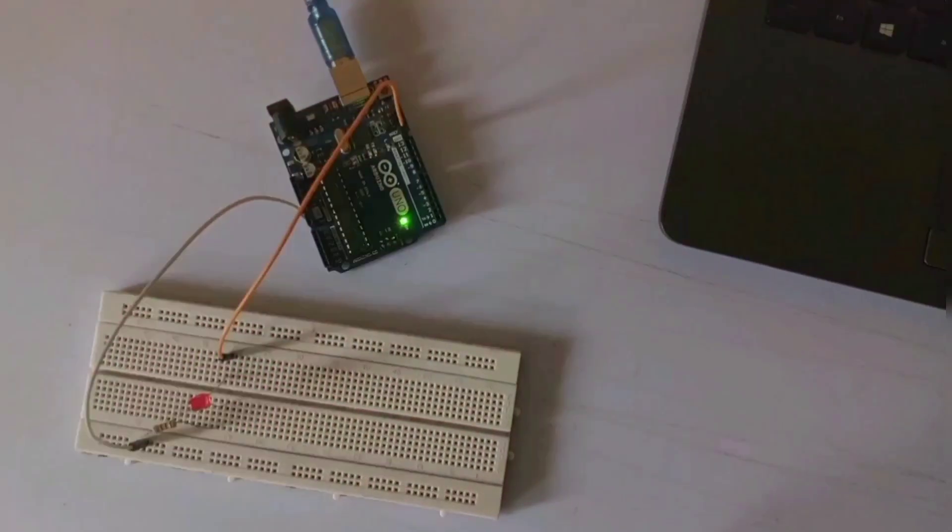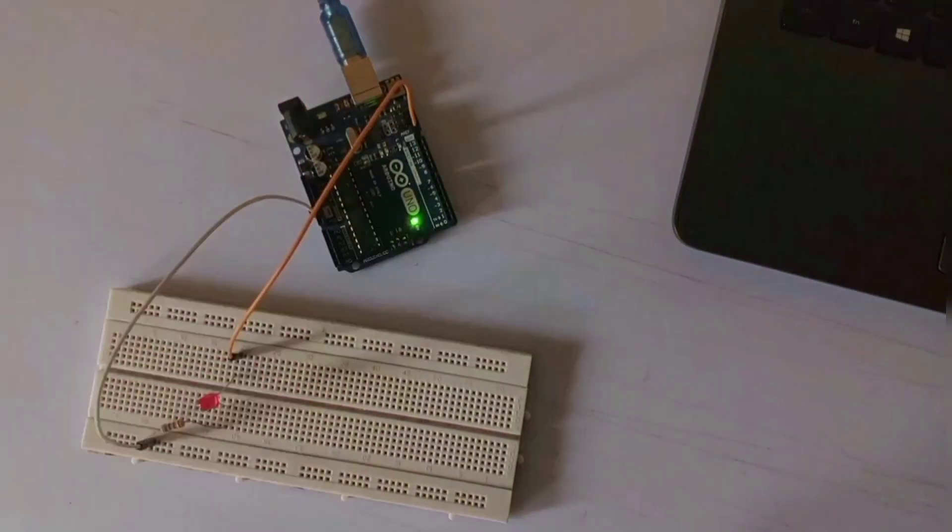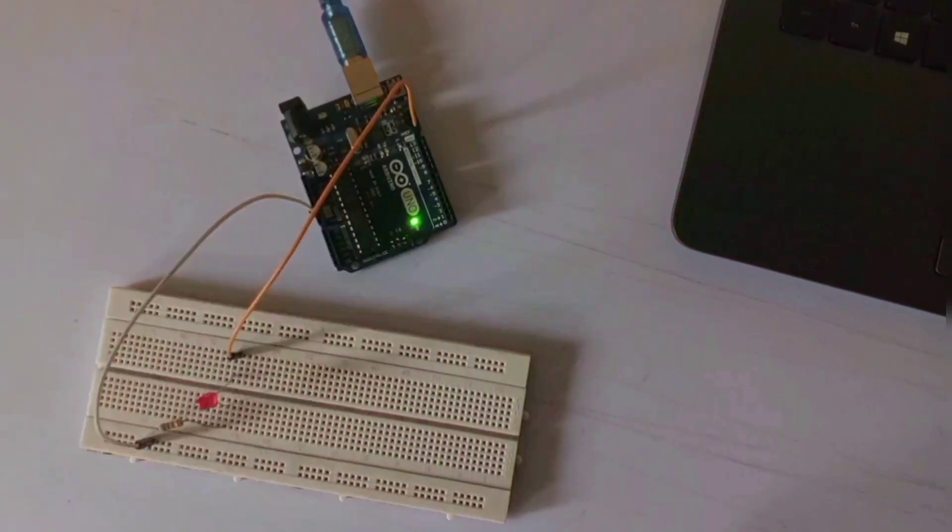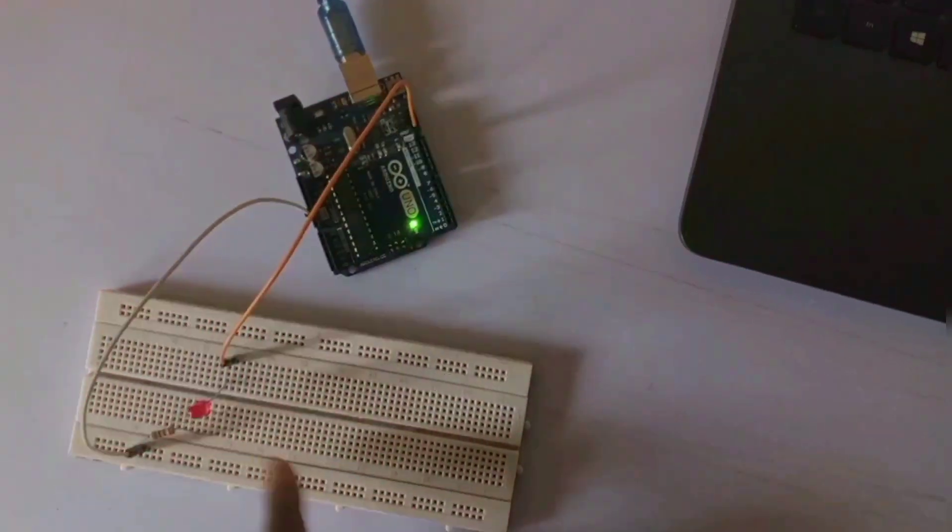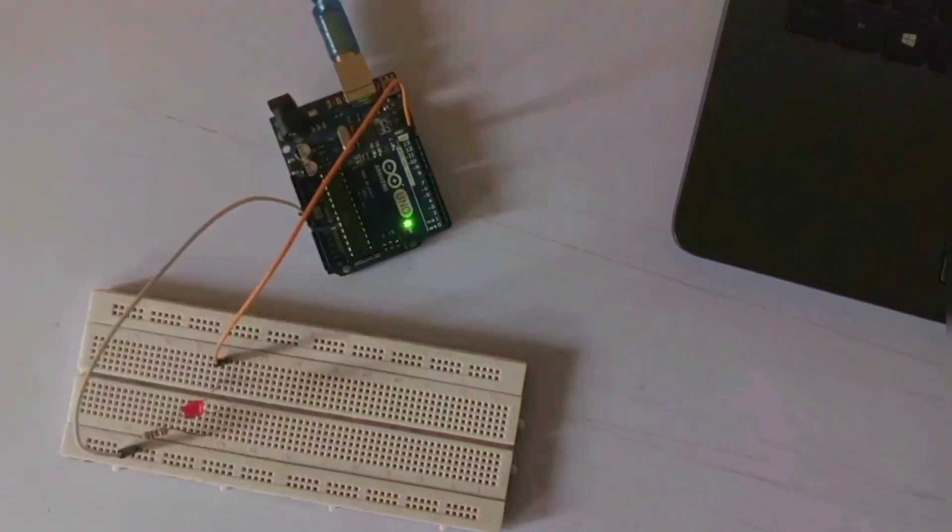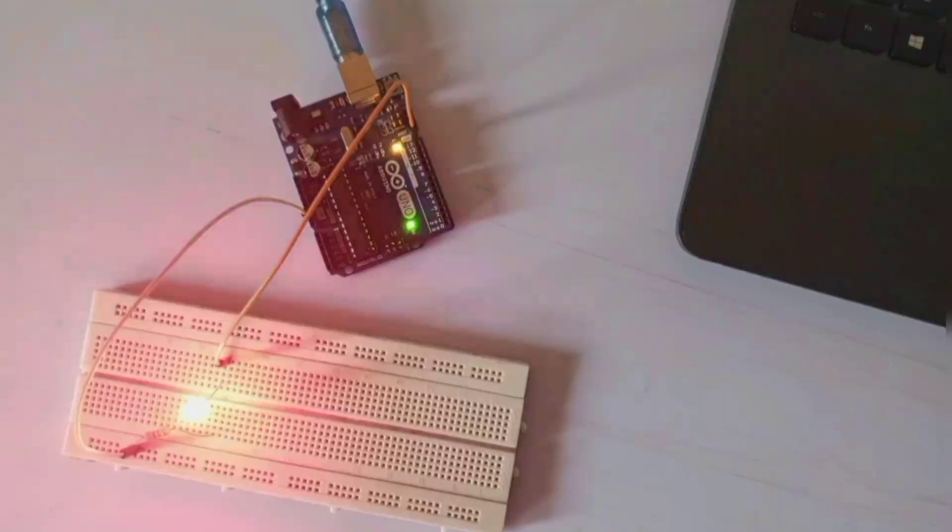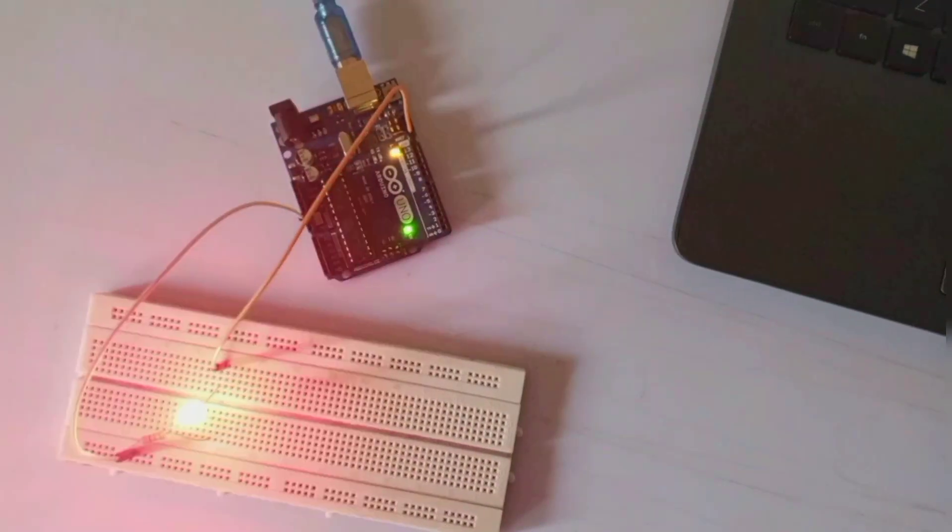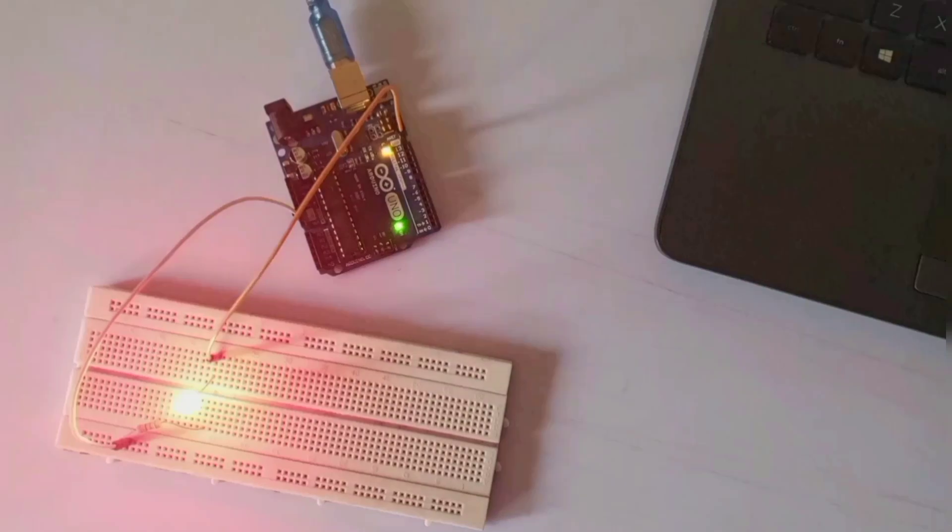You can see that we use the resistor here to limit the flow of current, and here you see the timing with which the LED is using to come on and go off. This is the hello world of embedded systems, like you write hello world on your computer when starting your journey into programming.